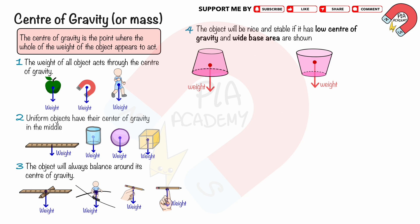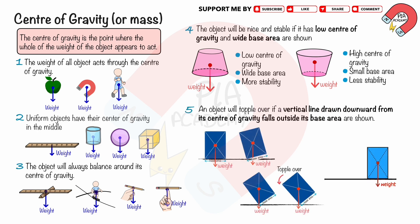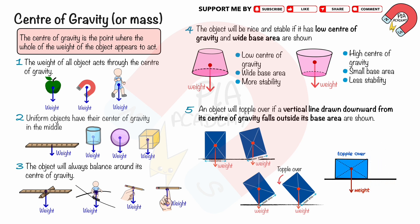For example, a conical frustum placed with its wider base on the ground is more stable than when flipped upside down. In the first case, the center of gravity is lower and the base area is wider, so there is more stability. In the second case, the center of gravity is higher and the base area is smaller, so there is less stability. An object will topple over if a vertical line drawn downward from its center of gravity falls outside its base area.